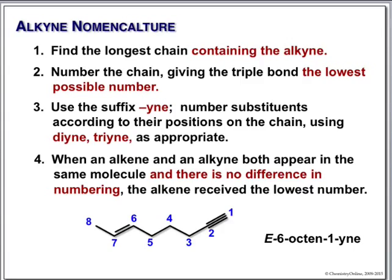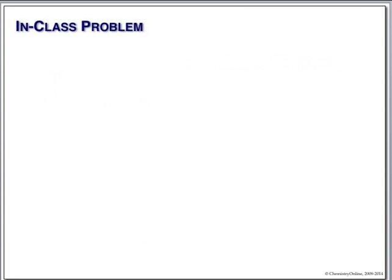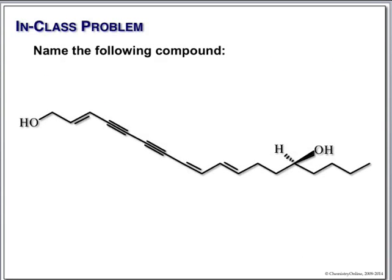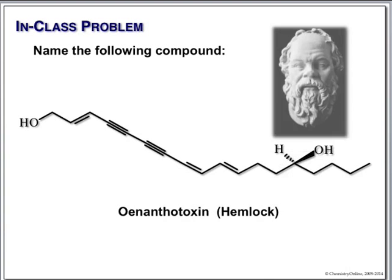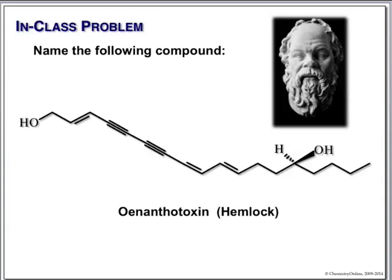The one that was on the exam is nothing nearly as simple as these examples. With natural products you can get combinations of double and triple bonds — and the simplest name for one such compound is Hemlock, which is what poor Socrates was forced to drink. It's quite toxic.